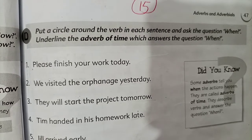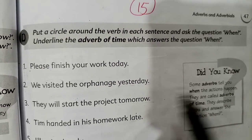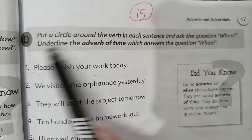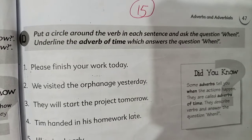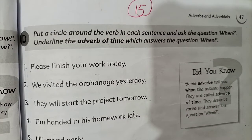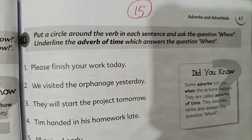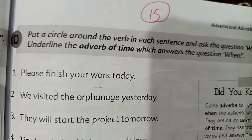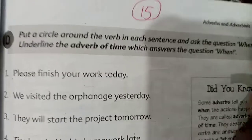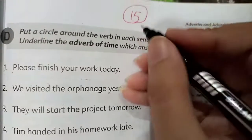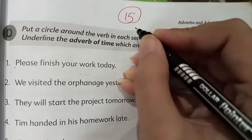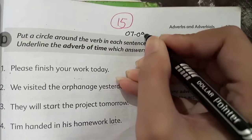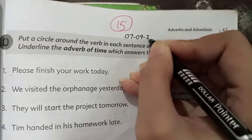Yesterday we had exercise number C, so now we will do exercise number D at page number 47. Let's open our grammar skills book and turn to page number 47. Our date is 7, 9, 21.